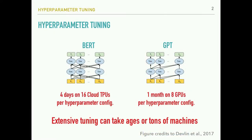In modern deep learning and machine learning system development, hyperparameter tuning is one of the key procedures to attain strong model performance. However, this procedure can be computationally or labor-intensive. For example, for the recent language representation model BERT from Google or GPT from OpenAI, it can take up to four days on 16 TPUs or one month on eight GPUs to train a single model with a single hyperparameter configuration. Thus, extensively tuning these models can take ages or tens of machines.